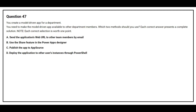Question 47: You create a model-driven app for a department. You need to make the model-driven app available to other department members. Which two methods should you use? Option A: send the application's web URL to other team members by email. Option B: use the share feature in the Power Apps designer. Option C: publish the app to AppSource. Option D: deploy the application to other users' instances through PowerShell. The correct answers are Option B: use the share feature in the Power Apps designer, and Option C: publish the app to AppSource.